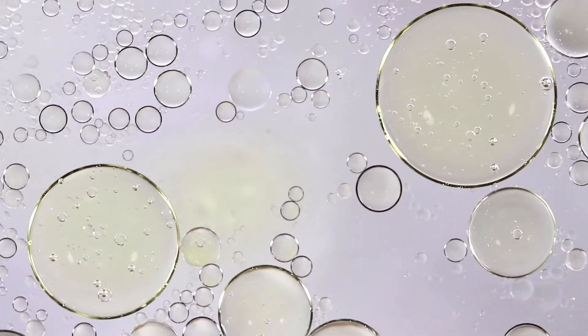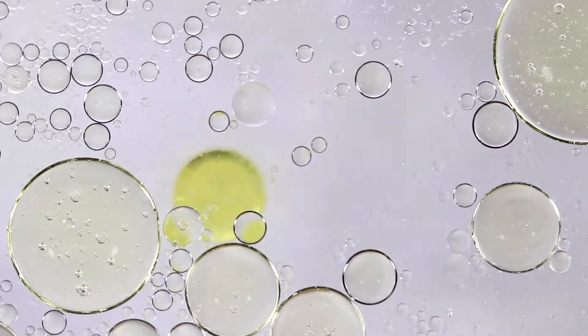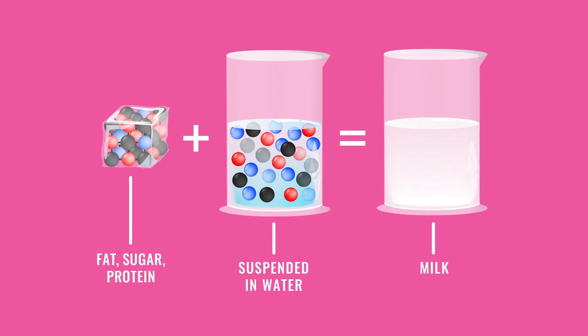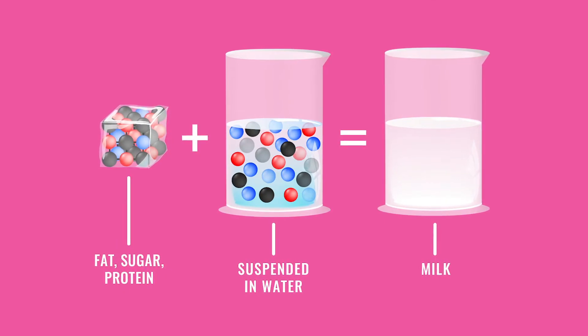Milk is something that we call a colloid. It is a mixture where small particles are fully suspended and are not going to naturally separate. In the case of cow's milk, we have fat, sugar, and protein all suspended in water.